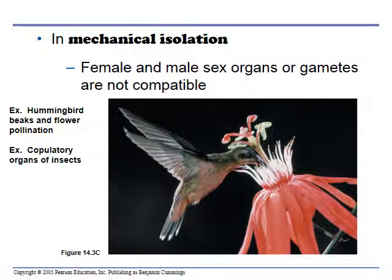Mechanical isolation is where the female and male sex organs or gametes are not compatible. For example, a hummingbird's beak length is very specific to a certain flower — it gets pollen on its head and then pollinates the next flower of the same species only. There are also fly species where the sex organs are so specific they physically cannot copulate with other flies.